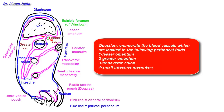Also note the extension of the lesser sac into the greater omentum. In life this extension is obliterated, so the gastrocolic omentum fuses with the anterior surface of the colon and the four layers become double layers. The lesser sac is therefore confined to the area behind the stomach and behind the liver.